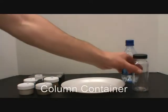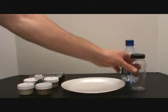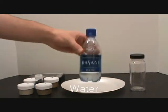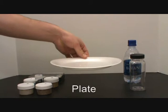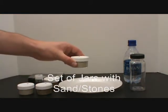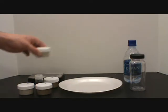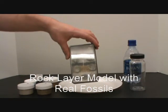For this demonstration, you and each table of students will need a column container, water, a plate, a set of jars of different color sand containing different stones to represent different rock and fossil types, and a model of rock layers containing real fossils.